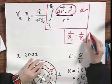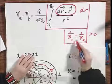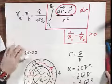It is one over R1 minus one over R2. And this is larger than zero for the simple reason that R1 is smaller than R2. So VA is larger than VB.